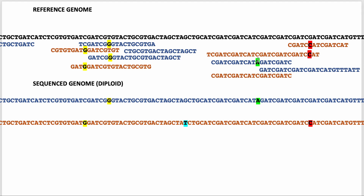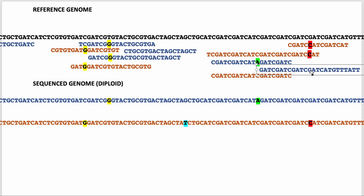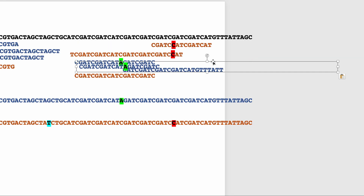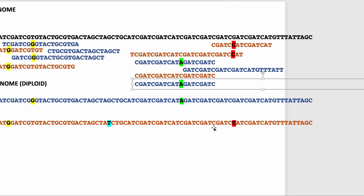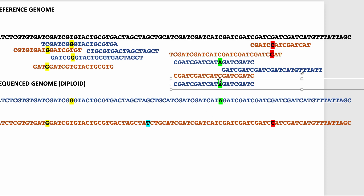Likewise, this individual might be heterozygous at another position. But you wouldn't necessarily always find the alternate base — for example, if you didn't sequence the fragment from the other chromosome, you might think the individual is homozygous because all you're getting is the C read. When you get another read showing a different nucleotide, that changes the inference. One thing to keep in mind is that you also have to consider sequencing errors, so you need multiple samples of a particular nucleotide to be confident that a base call at a given position is correct.